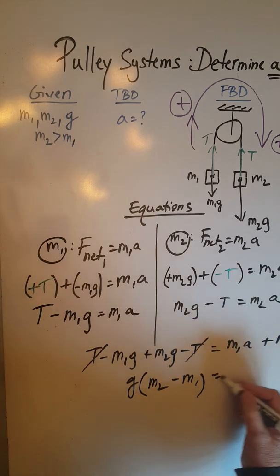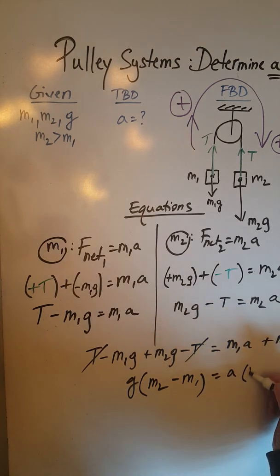And here I'm going to factor out an A which will leave me inside the parenthesis with an M1 plus M2. And at this time it's very simple to solve for A by simply dividing both sides by M1 plus M2.